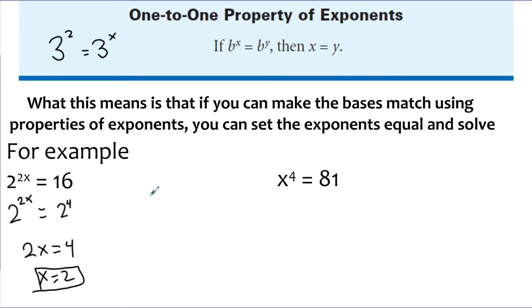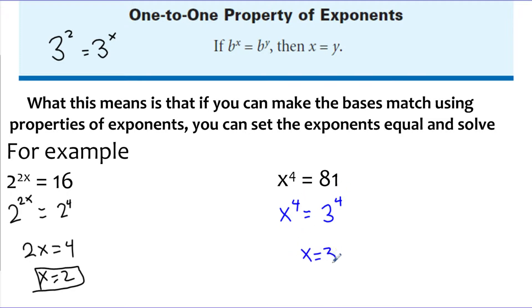We're going to be looking at problems where your job is to convert between forms — take something like 16 and put it into exponential form with the same base. We can do the same thing with x to the 4th equals 81. If I can write 81 as something to the 4th power, then the bases would have to be the same. Since 81 is 3 to the 4th, if the exponents match, the bases must be equal, so x has to equal 3.